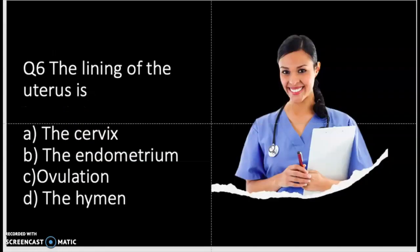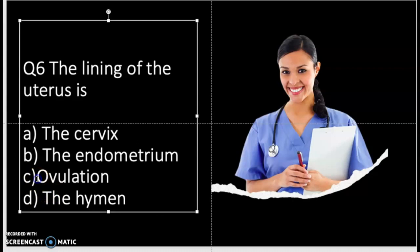Question number six: the lining of the uterus is A, the cervix, B, the endometrium, C, ovulation, or D, the hymen. Take a moment and think about it.